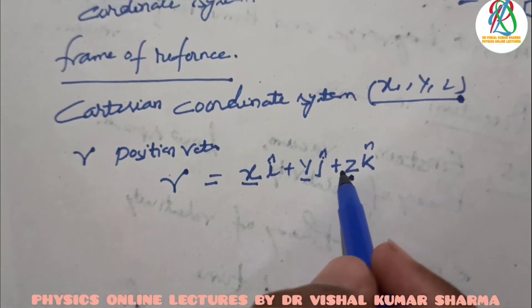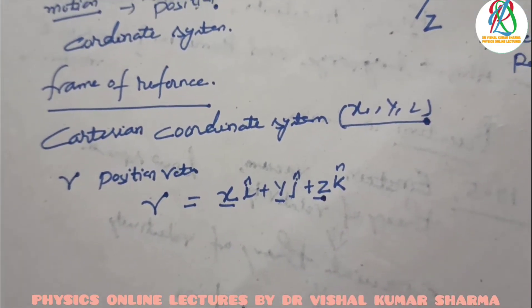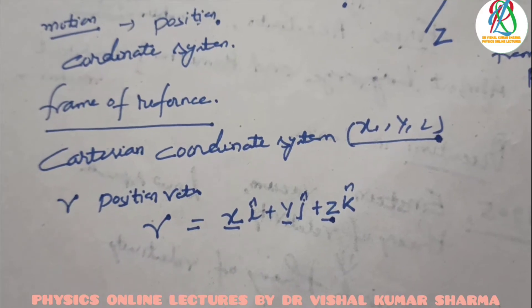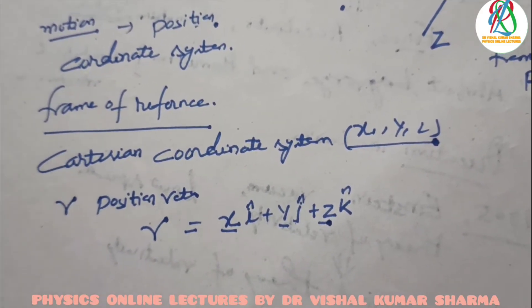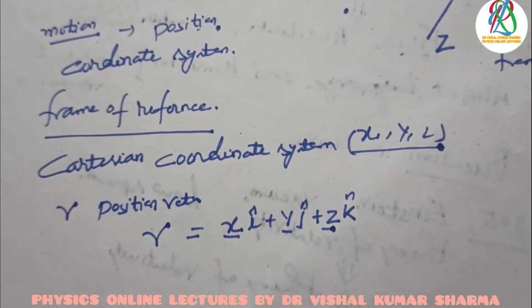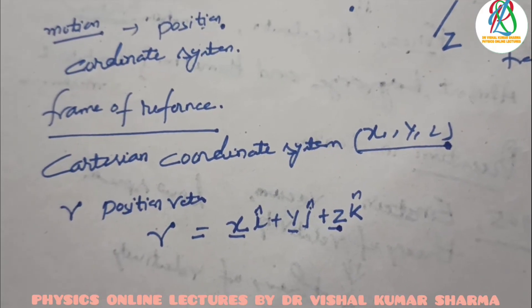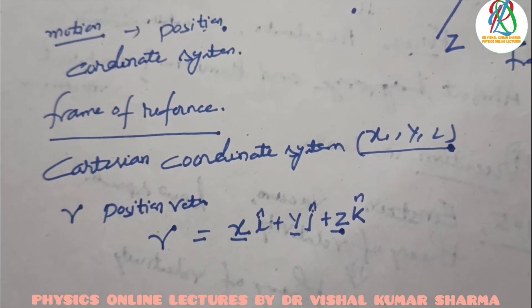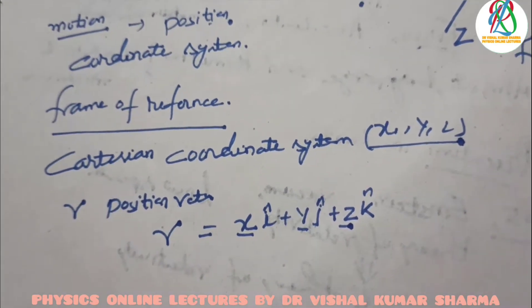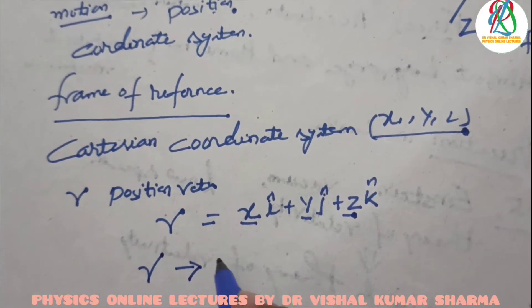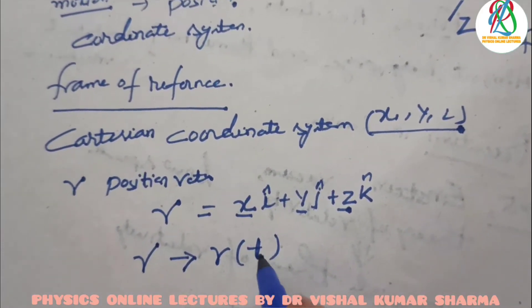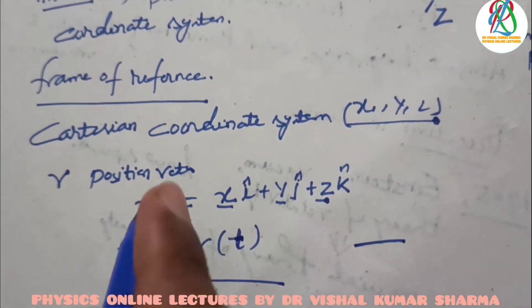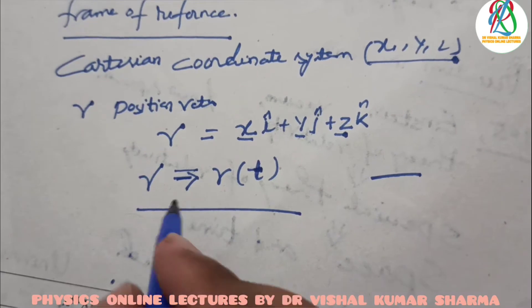To know the position of the particle at different instants of time, an observer must be stationed at the origin with a clock to measure the time. We obtain the position vector r of the particle as a function of time, so we can write r = r(t).